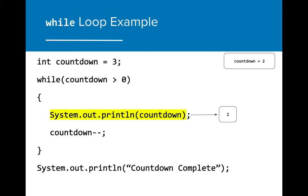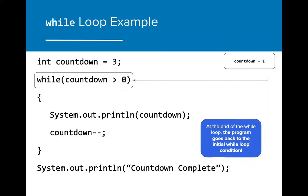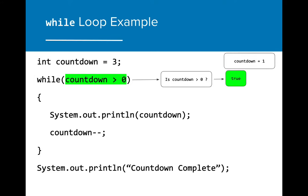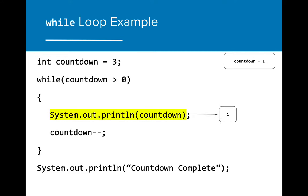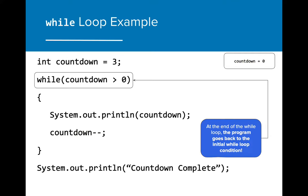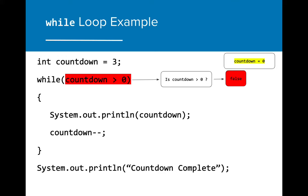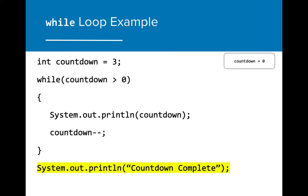The value of countdown will print, which is now two, and then the value of countdown is reduced by one. The while loop then returns to the beginning to test the initial condition again. Once again, the value of countdown is greater than zero, so the while loop executes. The value of countdown is printed, and then countdown is reduced by one. The while loop then returns to the beginning to test the condition again. This time, however, the condition within the while loop evaluates to false. As a result, the while loop is not executed. Since the while loop condition is false, the next line of code that executes is the final print statement that follows the while loop. It's important to note that this doesn't get called at all until the while loop condition is false, as the line of code follows the while loop.